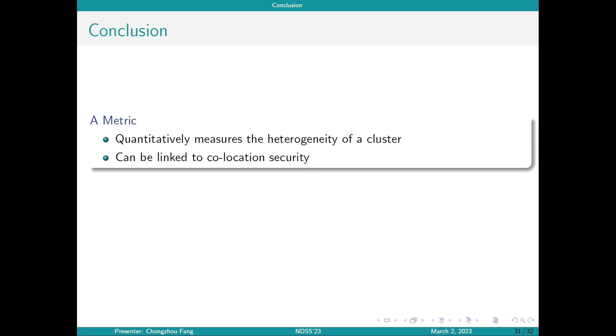In conclusion, in this paper, we propose a metric that can quantitatively measure the heterogeneity of a cluster. And we show that this metric can be linked to microarchitectural attack security since it is related to one important prerequisite of these attacks. Based on the metric, we provide two scheduler-level mitigation technologies and prove that both can effectively reduce the success rate of an attacker.